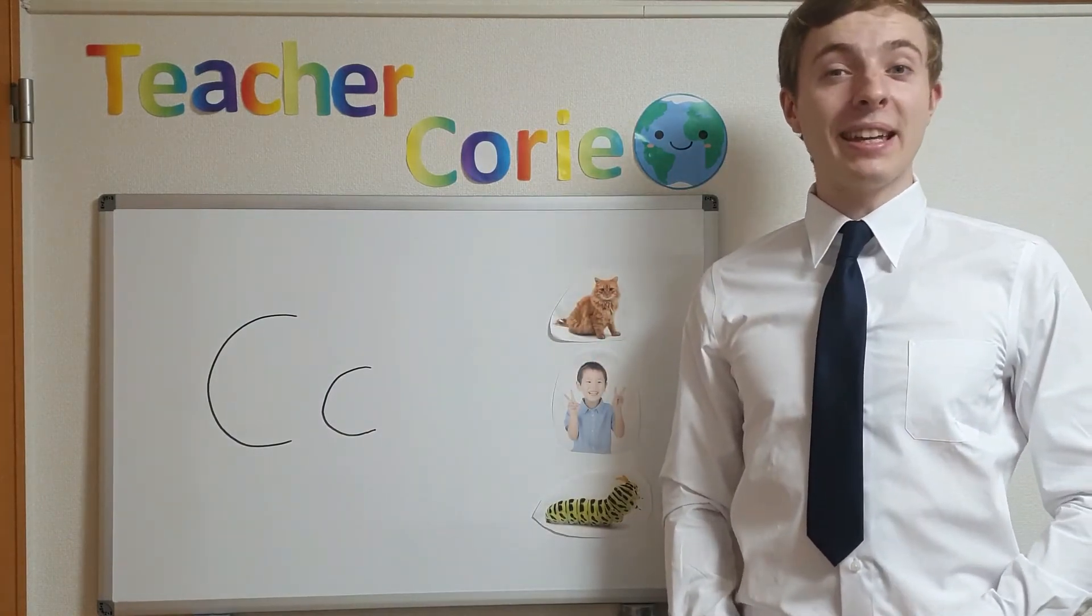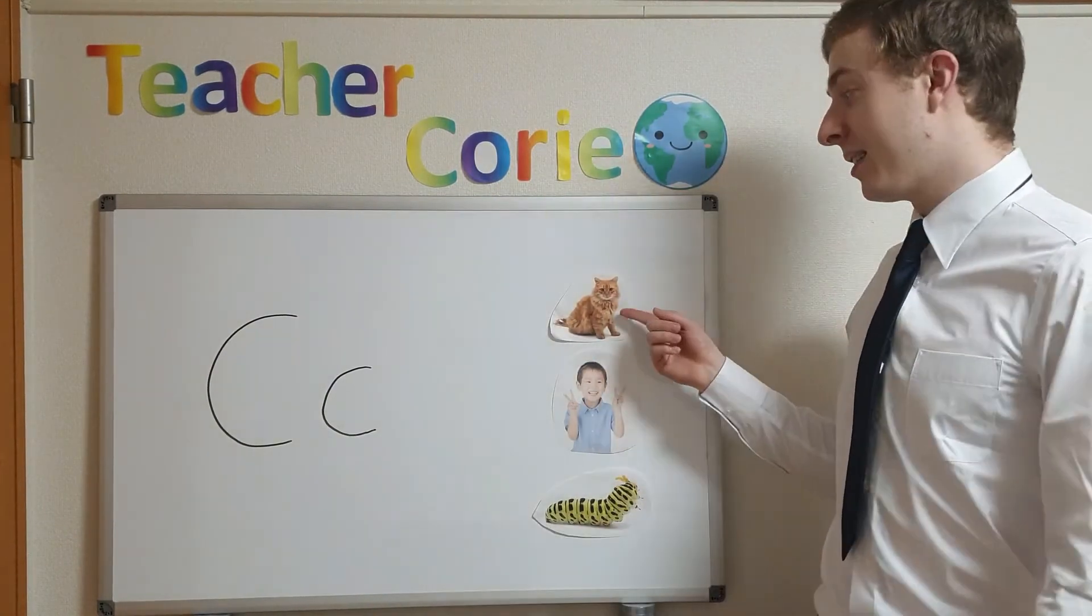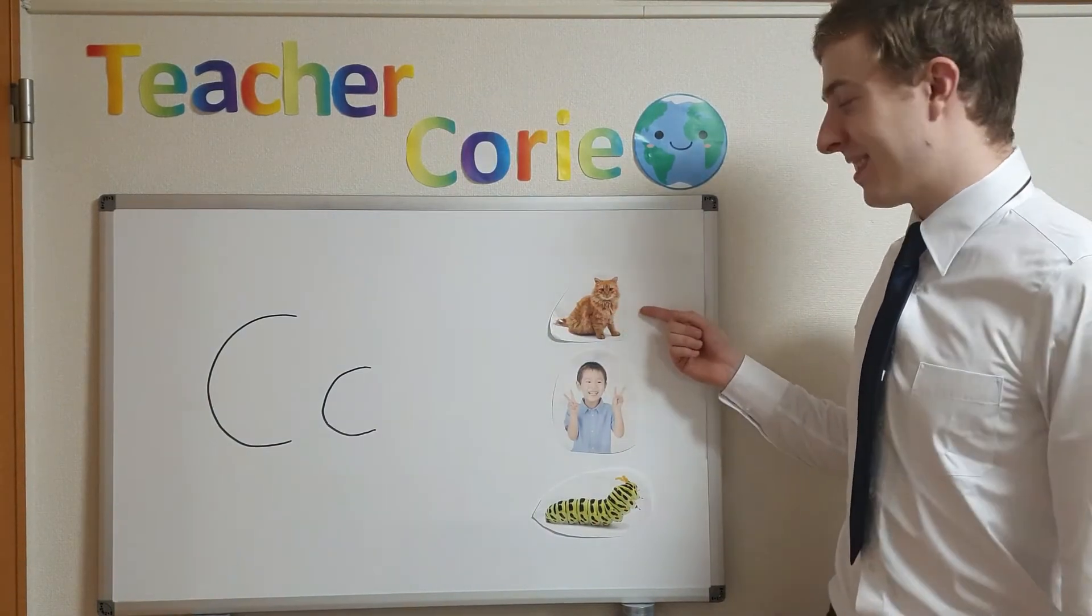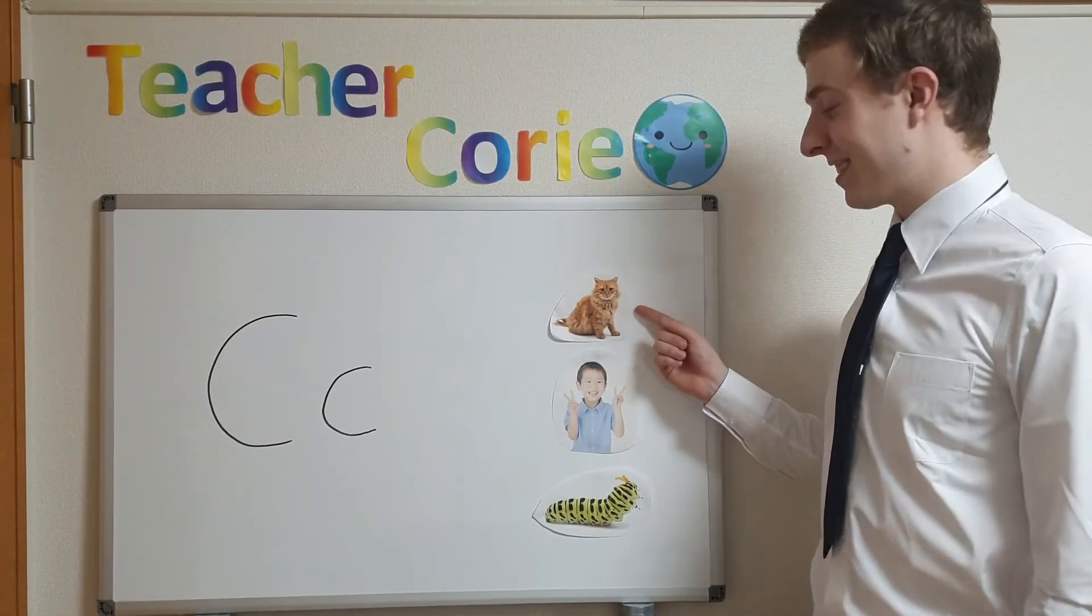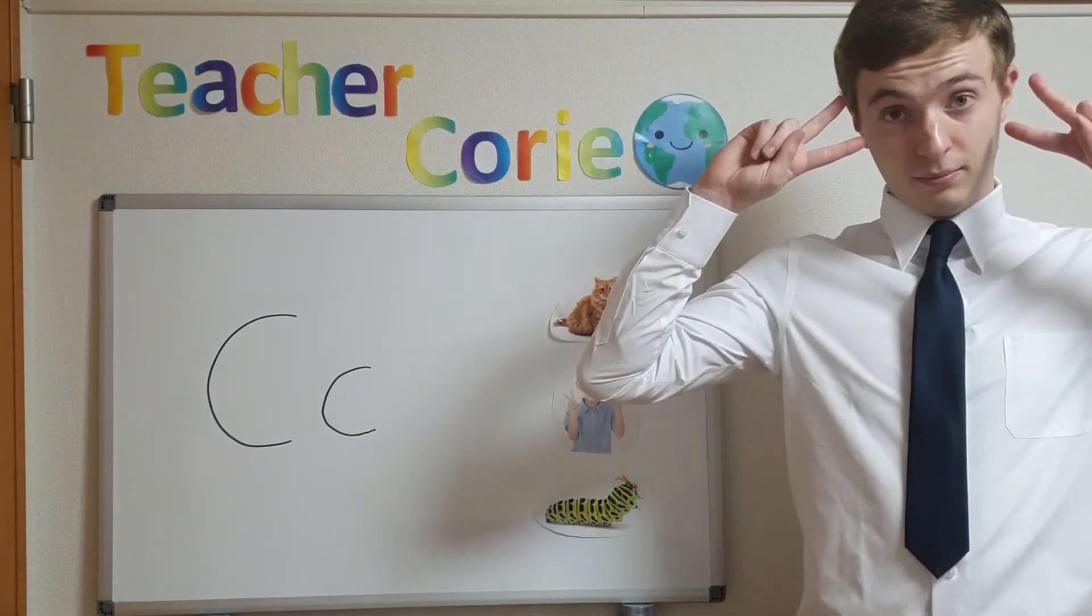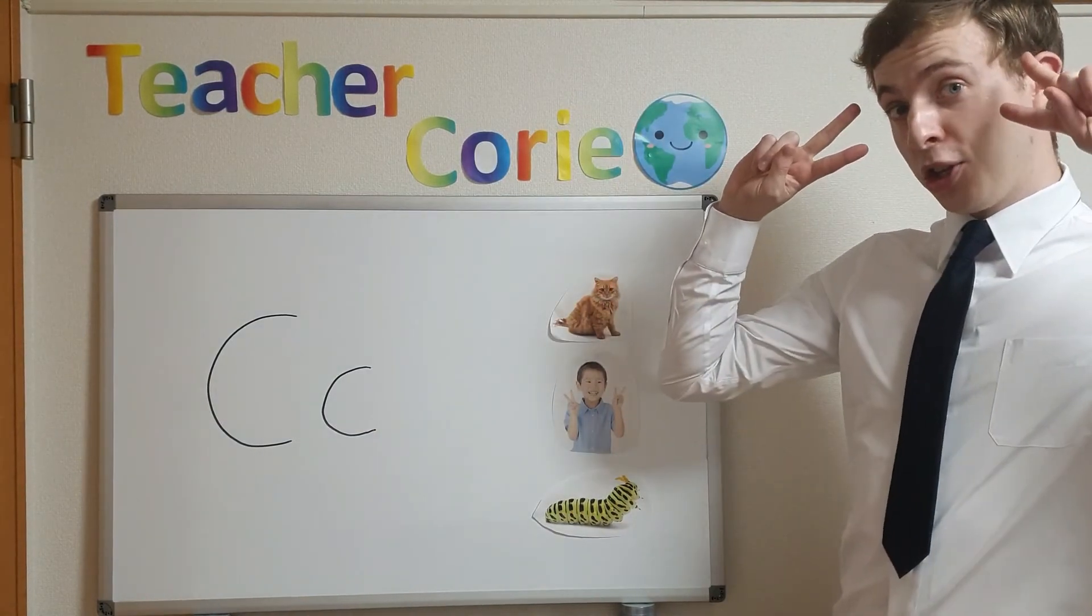What are the words beginning with C? K, K. Cat. Very good. Cat. Cat. Cute.